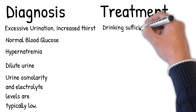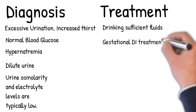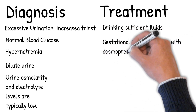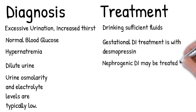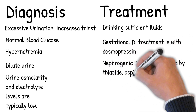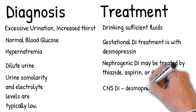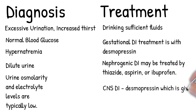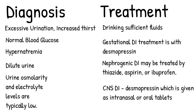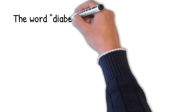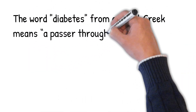Treatment involves drinking sufficient fluids to prevent dehydration. Other treatments depend on the type. In central and gestational DI, treatment is with desmopressin, given as intranasal or oral tablets. Nephrogenic DI may be treated with thiazide, aspirin, or ibuprofen. Carbamazepine, an anticonvulsive medication, has also had some success in this type of diabetes insipidus.